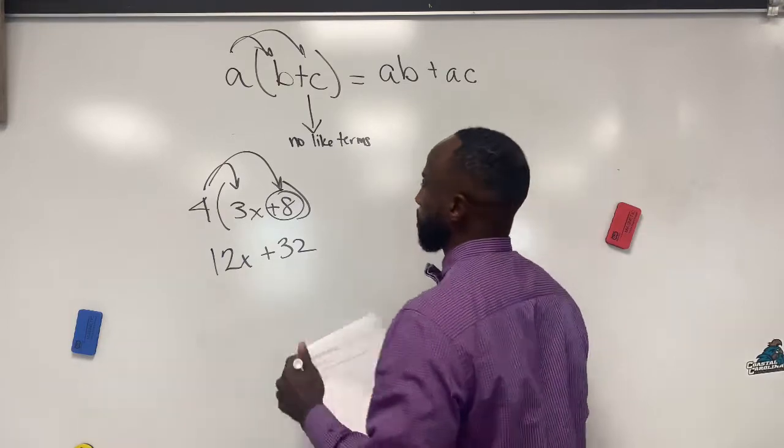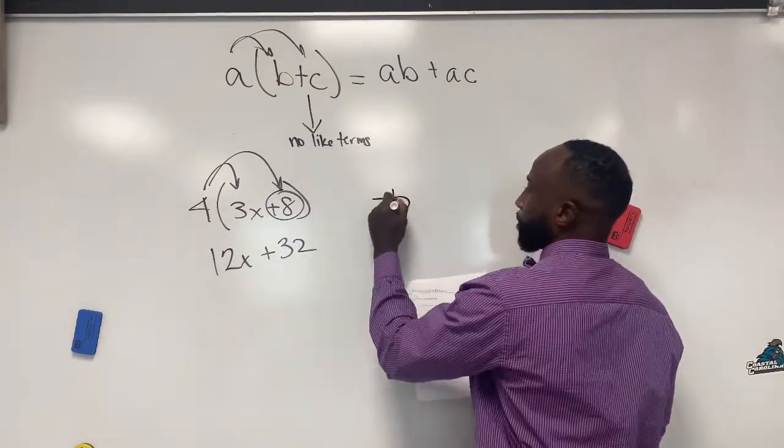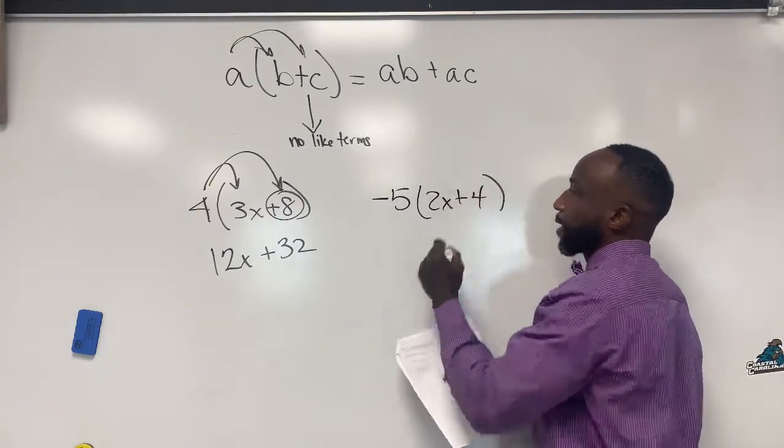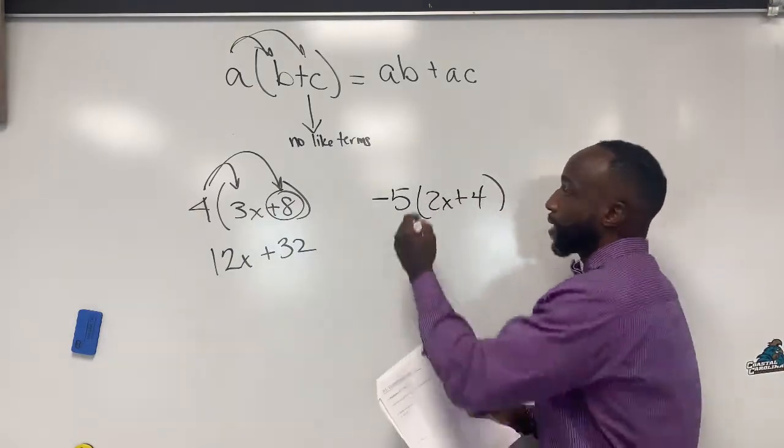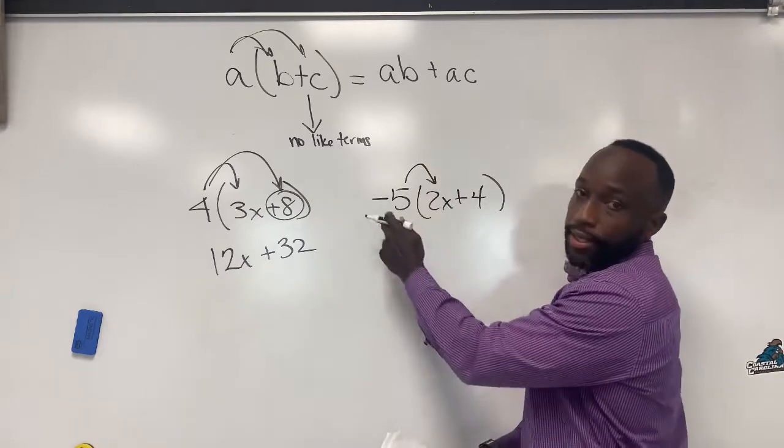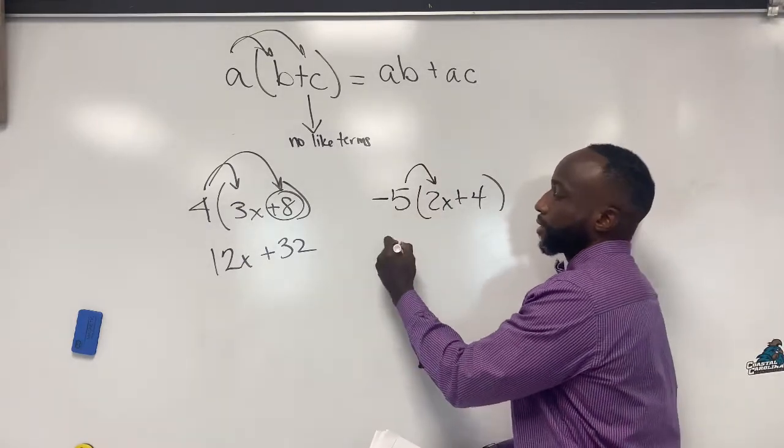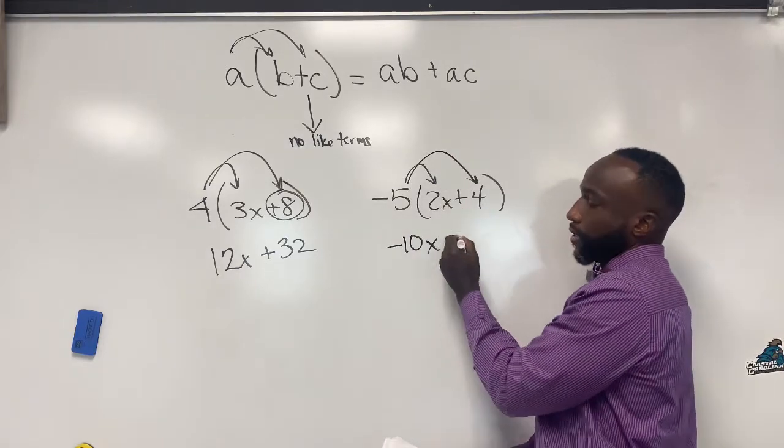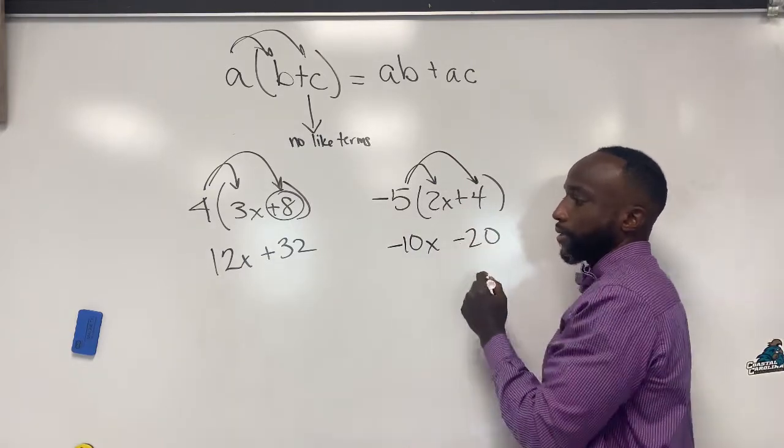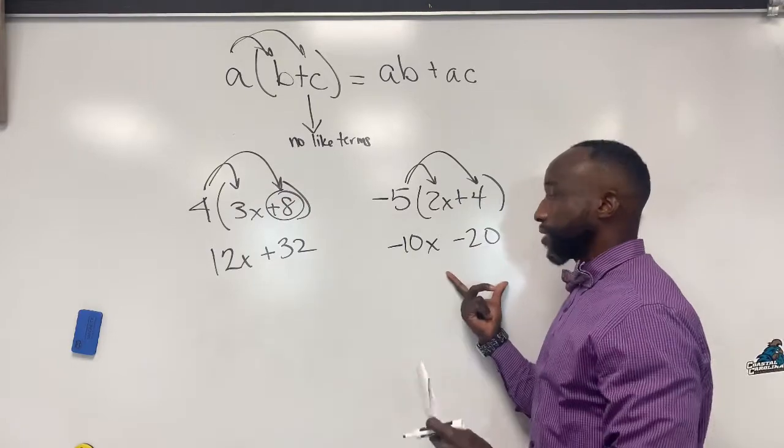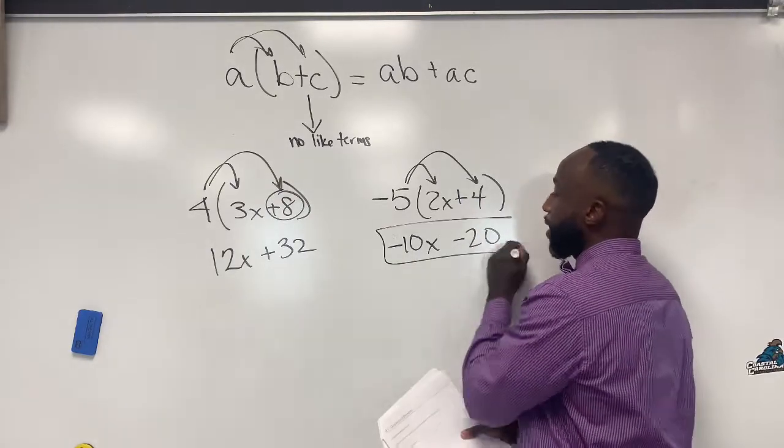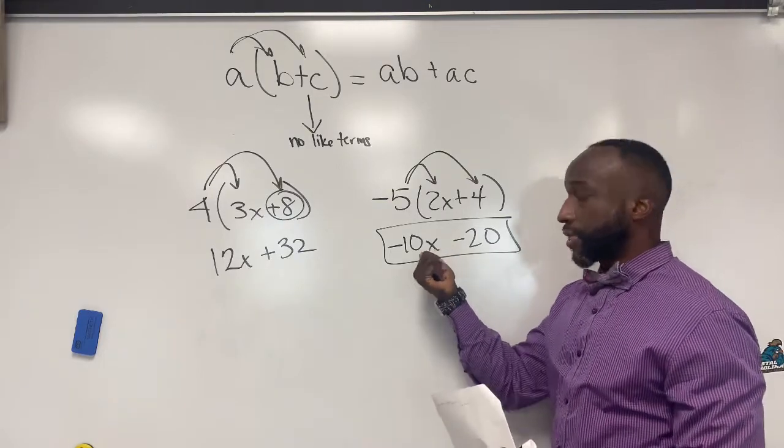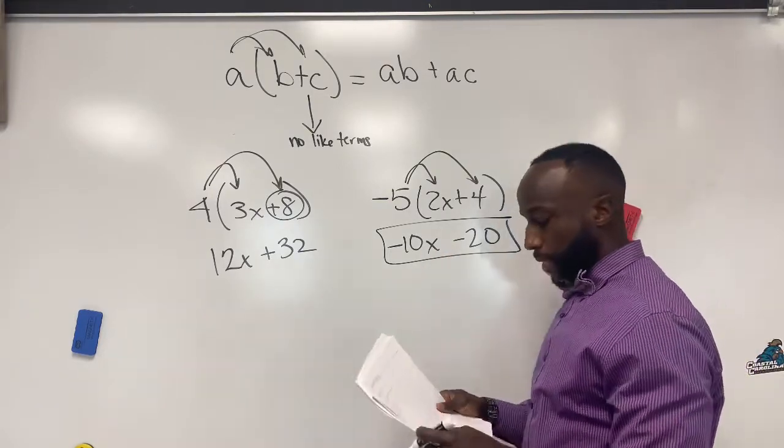Let's look at another example here where we have a negative number. We got negative five times the quantity of two x plus four. Again, draw your arrows to simplify. So it's going to be negative five times two x, which gives you negative ten x, and then negative five times four, which gives you negative twenty. Now, this is the answer. This is all you have because there are no more like terms. So this answer is not negative thirty. It is negative ten x minus twenty.